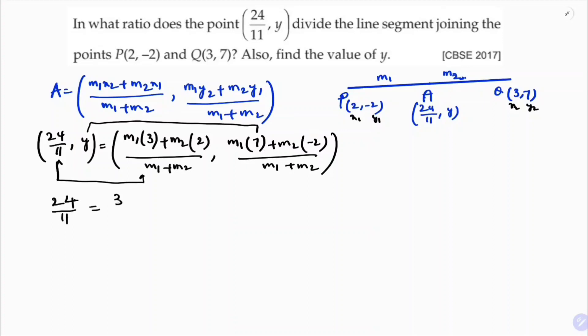24 by 11 equals 3m1 plus 2m2 by m1 plus m2. Now I will cross multiply. 24 times... 11 into 3m1 plus 2m2. So 11 times 3 is 33m1, 11 times 2 is 22m2, equals 24m1 plus 24m2. So all the m1 terms bring to one side: 33m1 minus 24m1 equals 24m2 minus 22m2.